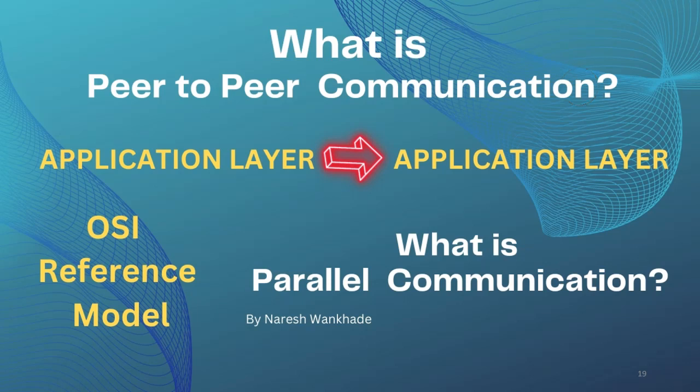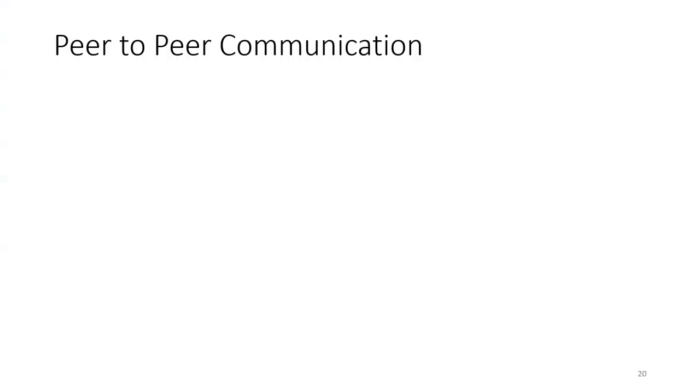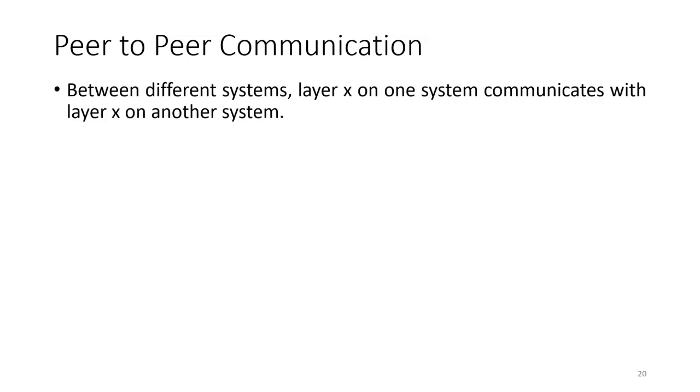In this video lecture we will see what is peer-to-peer communication and parallel communication associated with the OSI reference model. In previous video lectures we have seen interlayer communication and vertical communication associated with the OSI reference model. The meaning of 'peer' is equal — it refers to communication between two different systems.